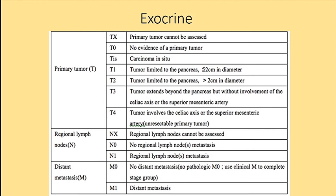For distant metastasis: M0 means no distant metastasis and M1 means there is. More specifically, M1a is when metastasis is confined to the liver, M1b is in at least one extrahepatic site, and M1c is both hepatic and extrahepatic metastasis.